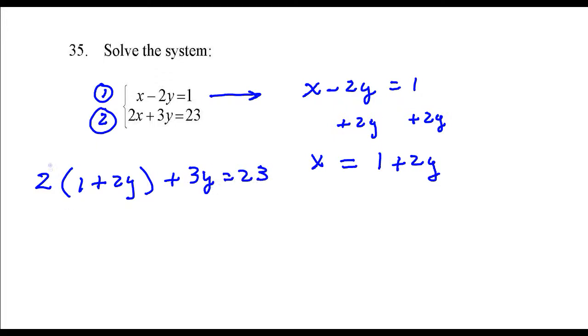I'll need to distribute this 2 to each term inside the parentheses. So 2 times 1 is 2, 2 times 2y, that's 4y. I can combine like terms on the left-hand side.